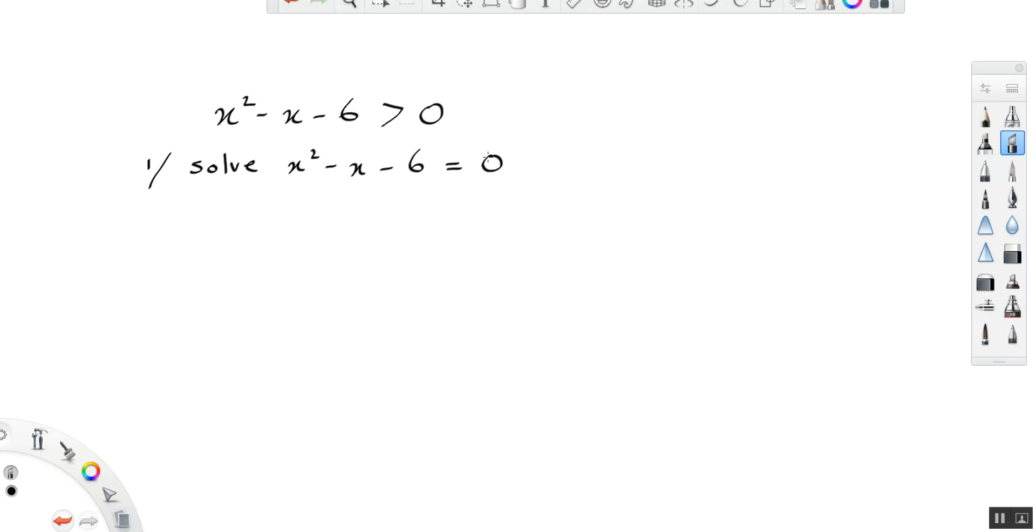So we go about our normal process. We can factorize this. It's going to factorize into x plus 2 times x minus 3. And that gives us x equals minus 2 or 3.